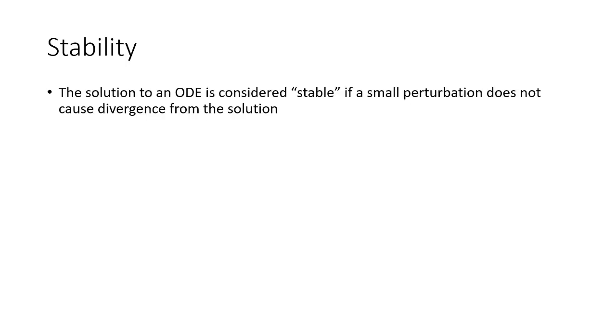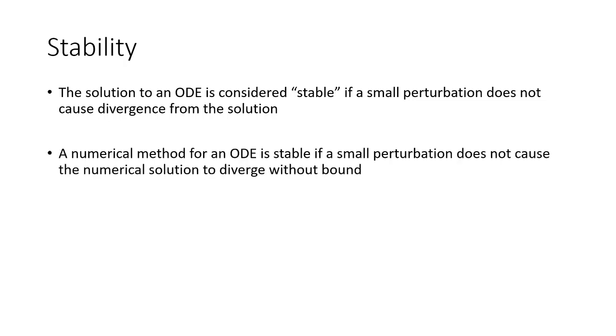So first we need to define stability. For the case of an exact solution to an ordinary differential equation, that exact solution is considered stable if a small perturbation does not cause a large divergence from the exact solution. Now for a numerical method, the method itself is considered stable if a small perturbation does not cause the numerical solution to diverge without bound. So think about this as the numerical method solution going to infinity. That's an unstable solution.